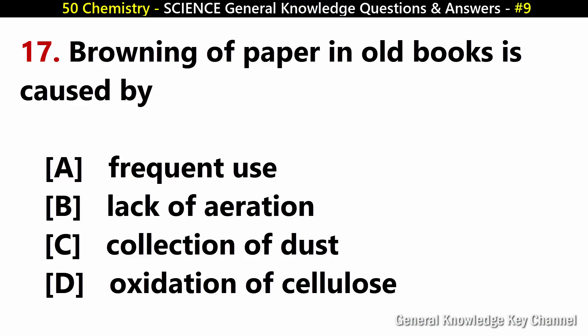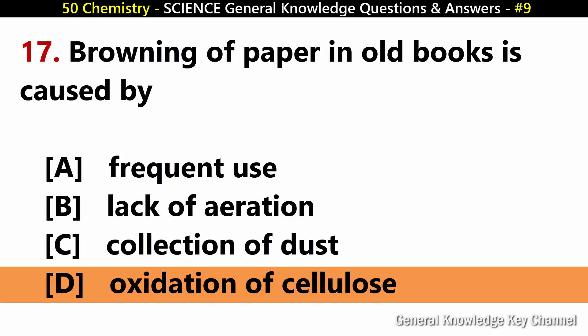Browning of paper in old books is caused by? Answer D: Oxidation of cellulose.